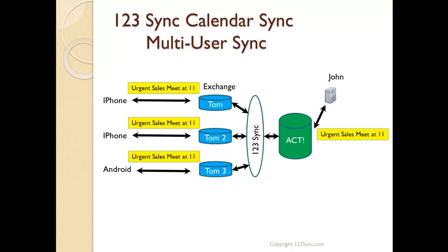At the same time, you have internal people in the company who are scheduling or adding that meeting to their list of meetings to attend. What 123 Sync does is it actually manages these interactions of this particular meeting, which is urgent sales at 11, and it manages these requests and puts them all together into one meeting.